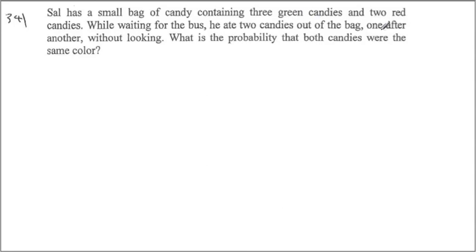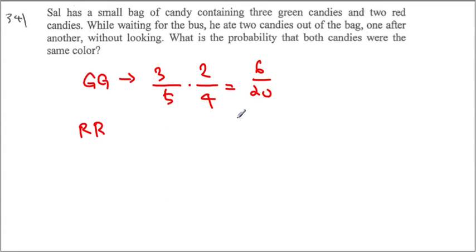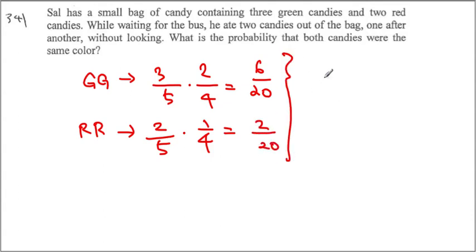We have 3 green and 2 red candies. He ate 2 candies one after the other without looking. What is the probability both candies are the same color? For green then green: 3/5 times 2/4 = 6/20. For red then red: 2/5 times 1/4 = 2/20. Combining them gives 8/20, which equals 2/5.